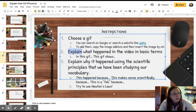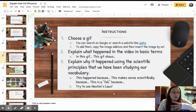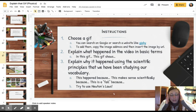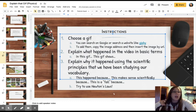Step number two, explain what happened in the video in basic terms. In this GIF, the girl swings a baseball bat at her brother's head, who's wearing a football helmet, and the bat comes right back at her and hits her in the head. So basically, just a general idea of what happened. If I can't see the GIF, imagine I can't see the GIF, and you're just telling me generally what's going on. Then, step three, notice only three steps to this. Explain what happened using scientific principles that we've been studying and our vocabulary. This happened because, this makes sense scientifically because, this is a fail because, and then try to include Newton's laws.